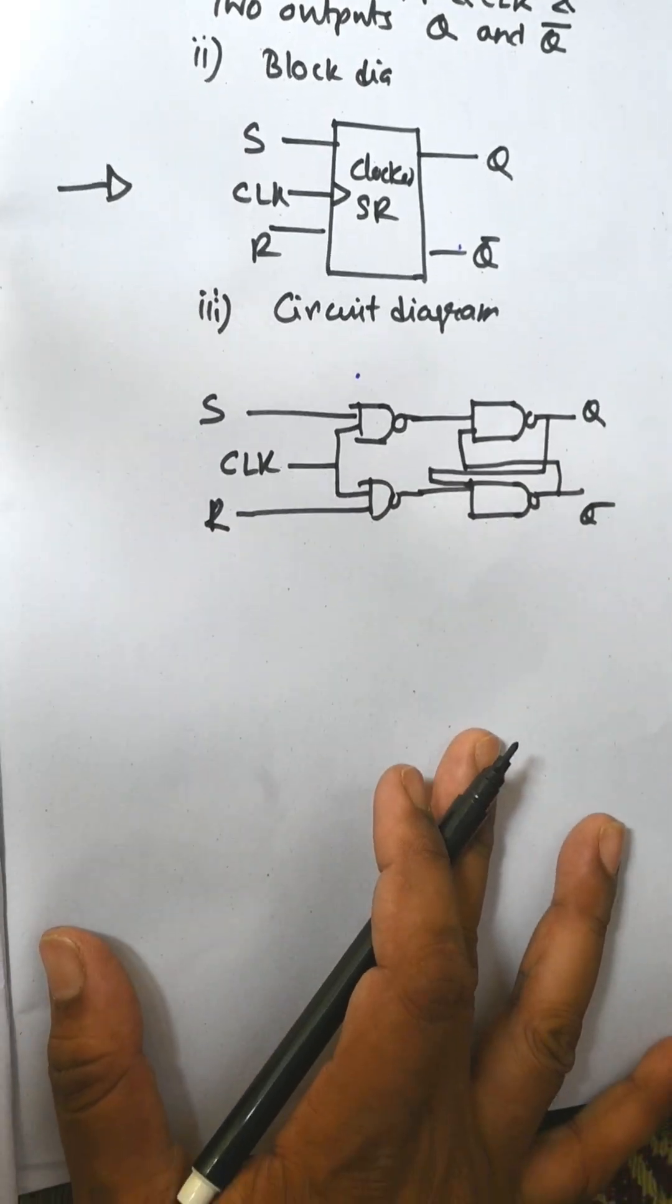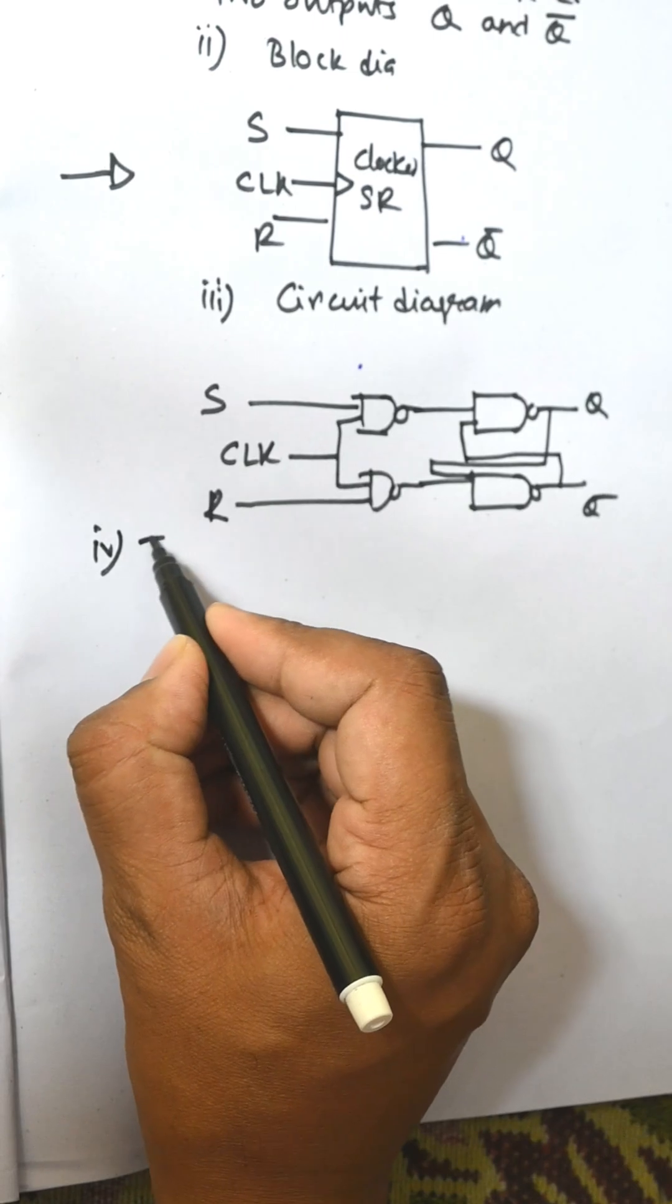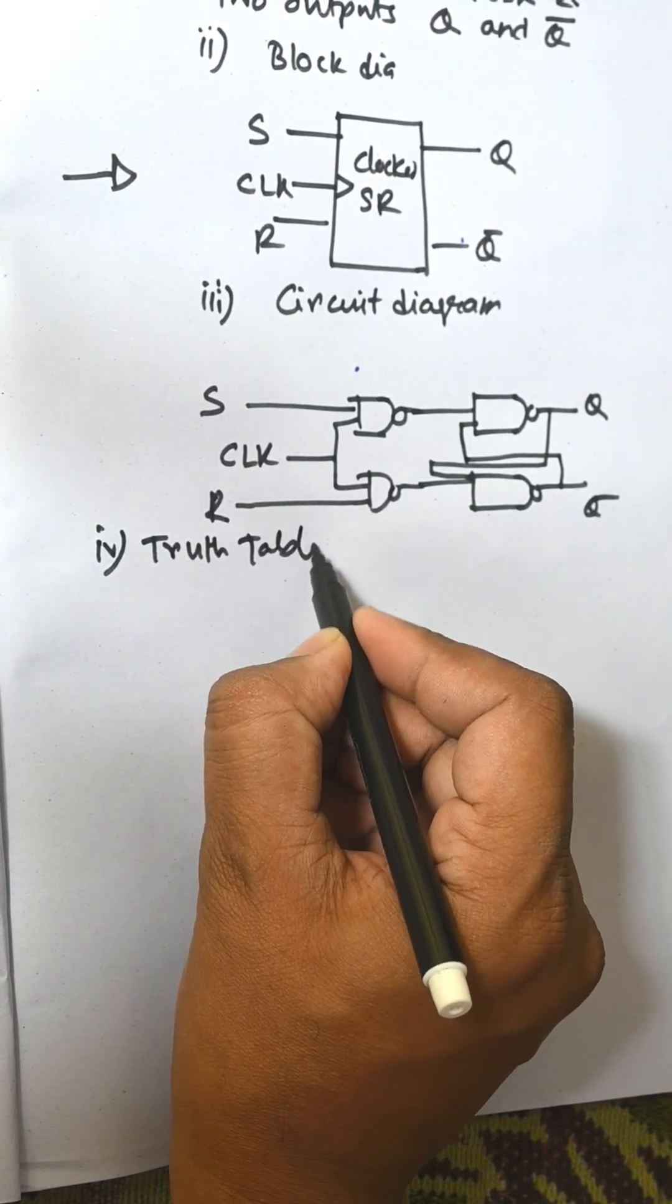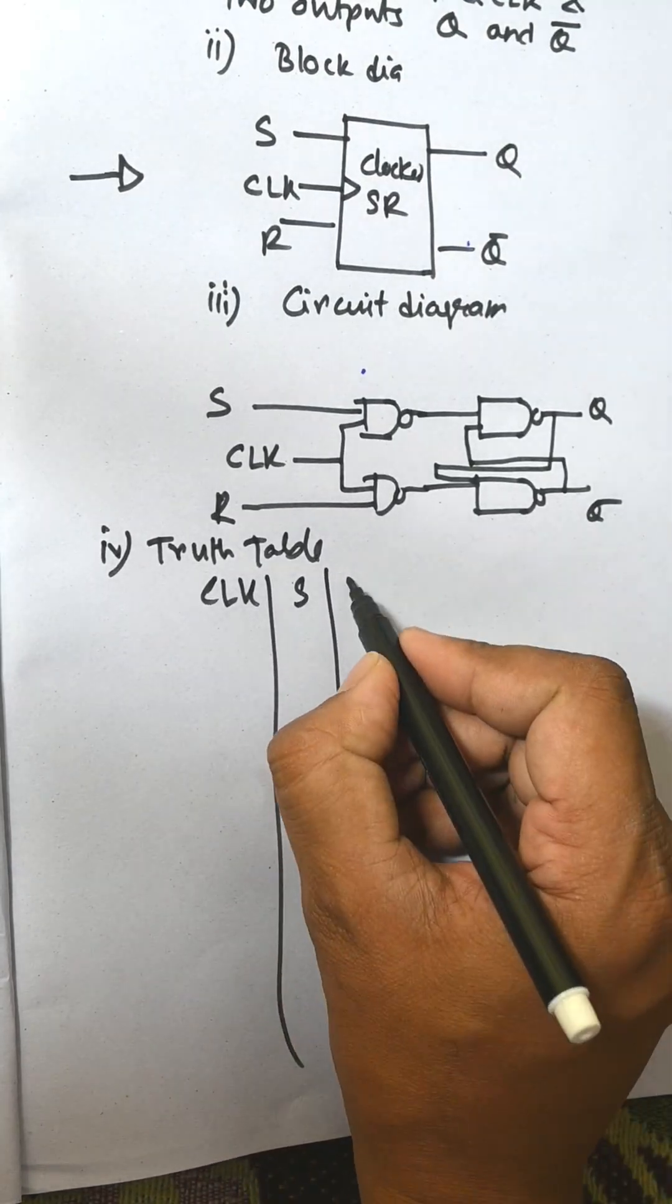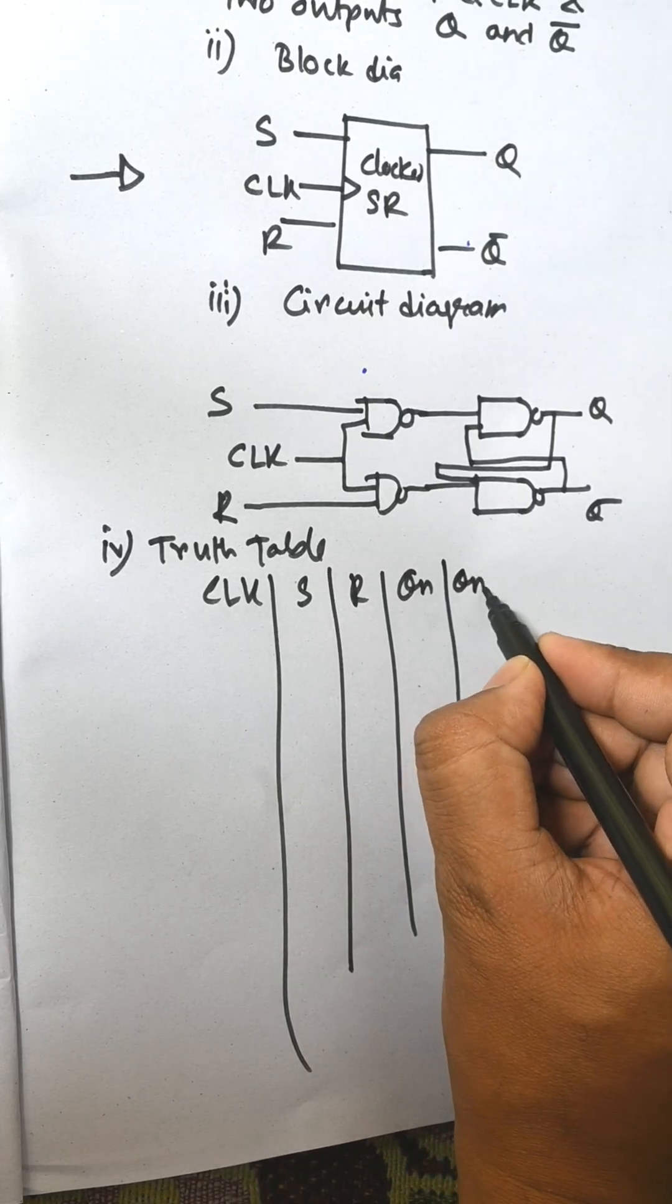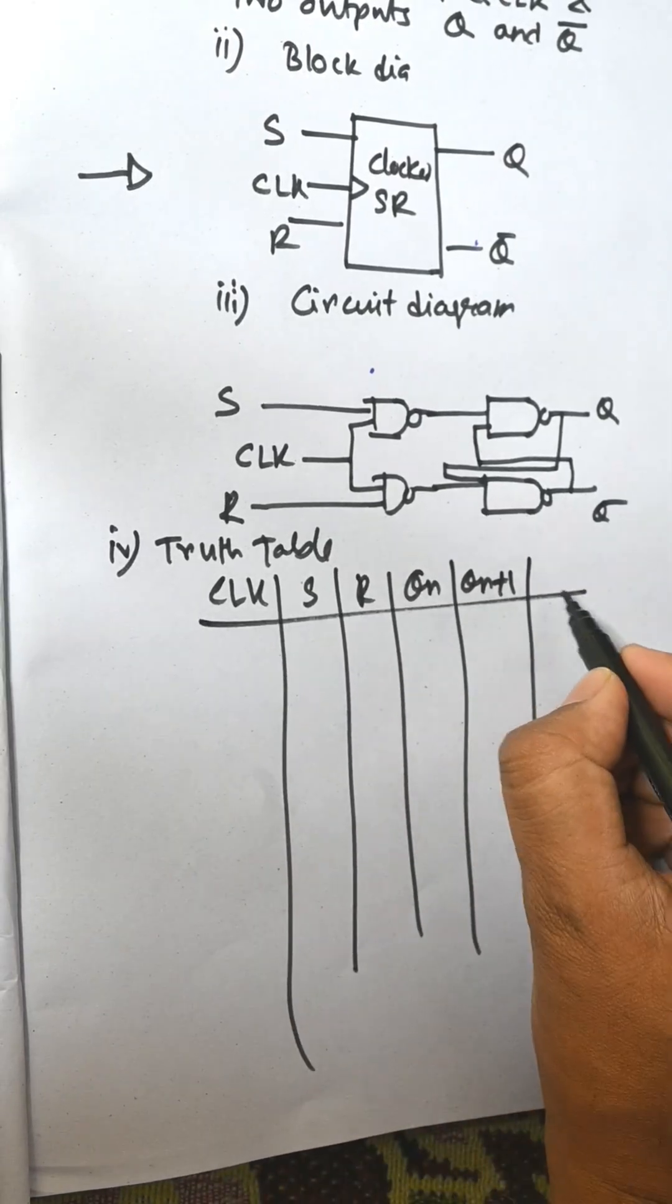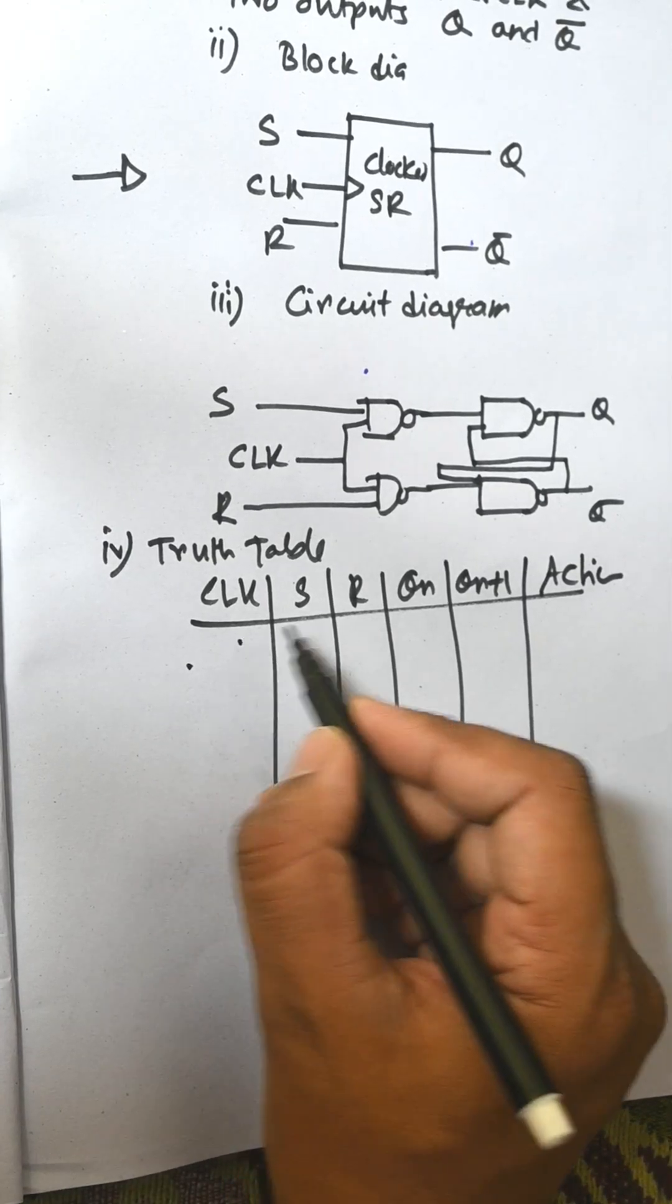Now the truth table. The truth table consists of CLK, S, R, Qn, and Qn+1 is the next state, and their corresponding action.